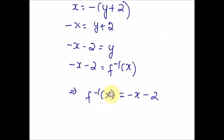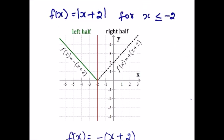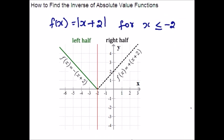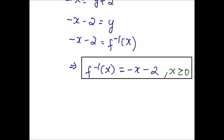All you have to do is replace y by f inverse of x. So we have found the inverse function. However, don't forget to include the domain of the inverse function as part of your final answer, because we are only considering the left half. The domain of the inverse function is the range of the original function. The range of the given function is y ≥ 0, so our final answer is f⁻¹(x) = −x − 2 for x ≥ 0.